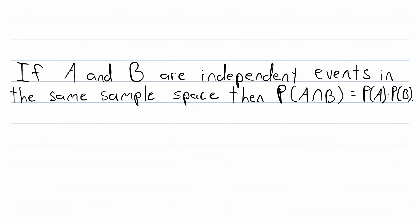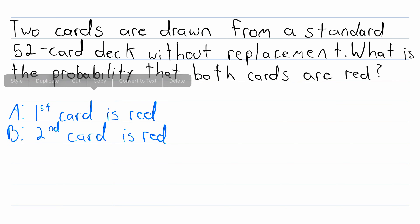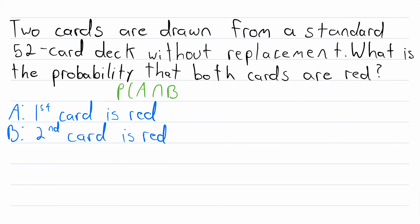Remember that events are independent if the occurrence of one doesn't affect the probability of the other. But two events are not always independent, so let's check out another example. Two cards are drawn from a standard 52-card deck without replacement. What is the probability that both cards are red? Let's name some events: A is the event that the first card is red, and B is the event that the second card is red. We're trying to find the probability of A and B occurring. For starters, what is the probability of A? Well, there are 26 red cards and 52 cards total, all equally likely to be drawn, so the probability of A is 26 over 52.